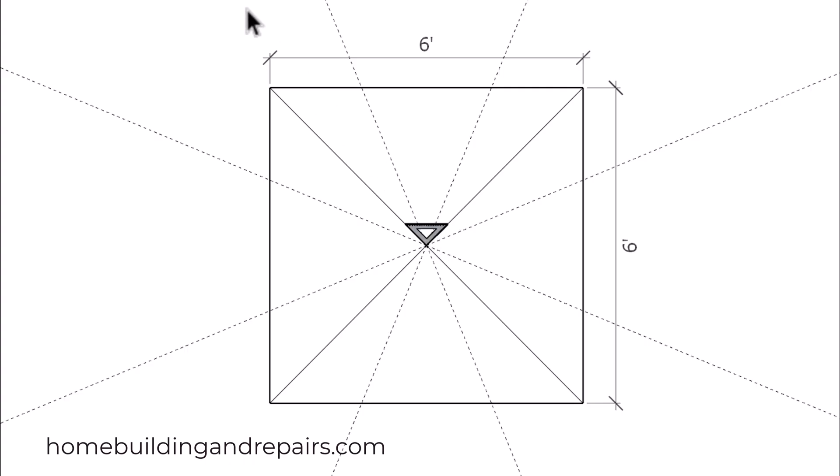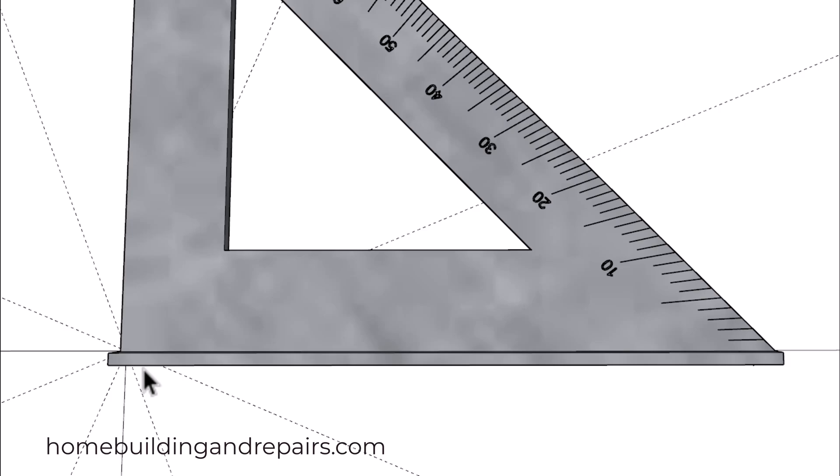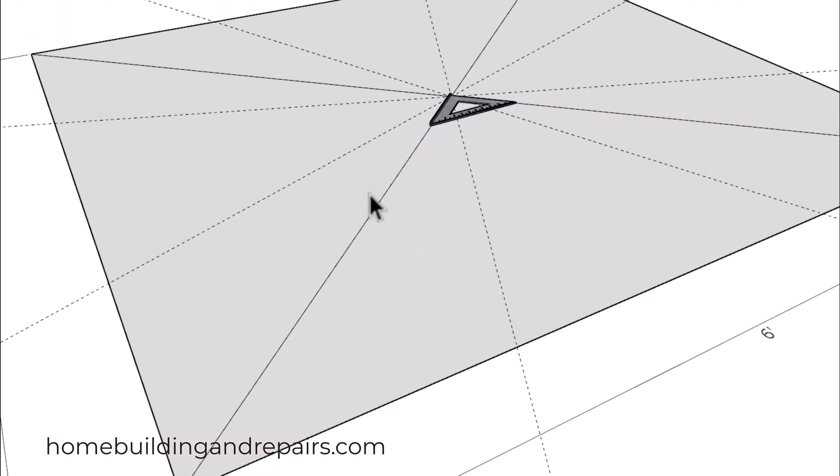You're simply going to take a speed square and come 22 and a half degrees off of it from one of those lines. Now you only need to do this once and you can see here where we're about 22 and a half degrees coming off one of these lines.